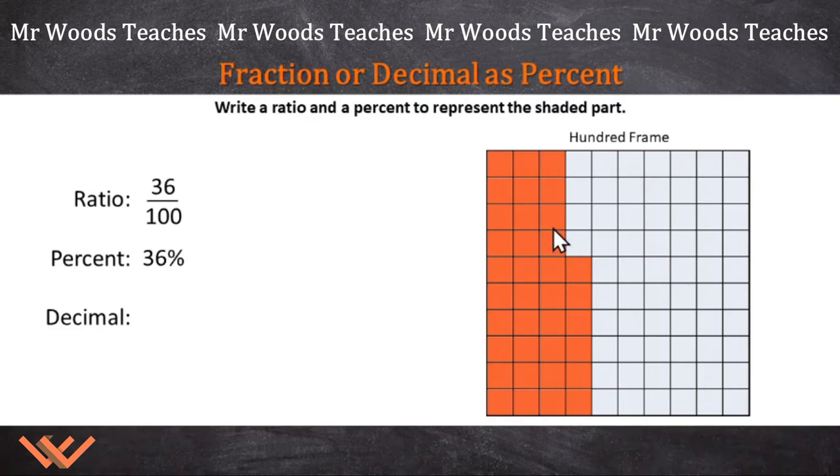Now, how do we represent this as a decimal? Well, if you look at this here, it's 36 hundredths. And if you remember, 36 hundredths can be written as 0.36. That's 36 hundredths.